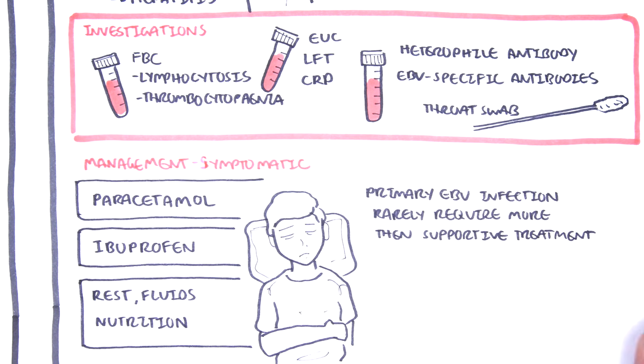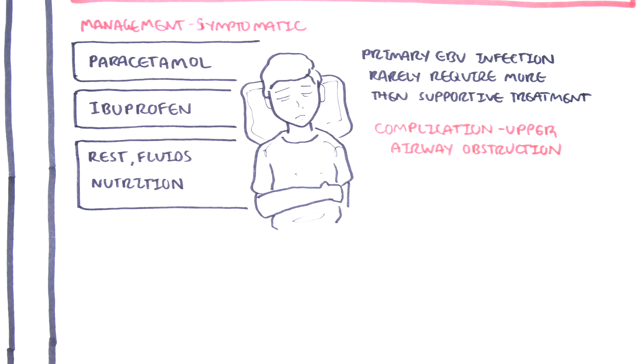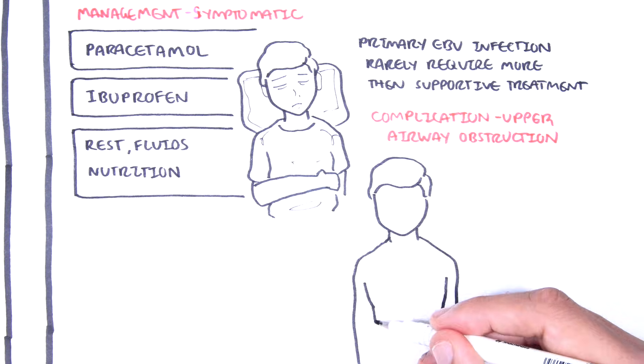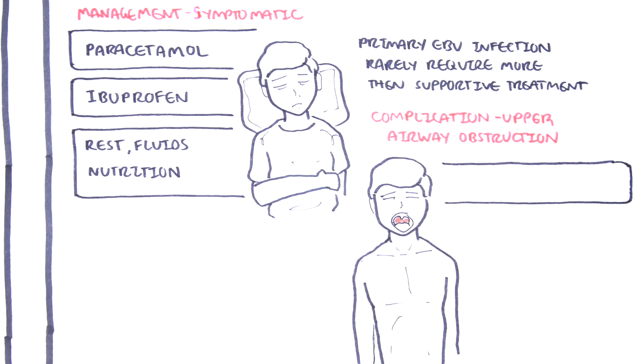Rarely, the enlarged tonsils will cause an airway obstruction. But if it does happen, it is important to admit the person, and they will likely need ENT involvement. Steroids are given to reduce swelling. Then potentially a nasopharyngeal airway is required. Intubation rarely, and especially emergency tonsillectomy or tracheostomy may be required, which is again rare.